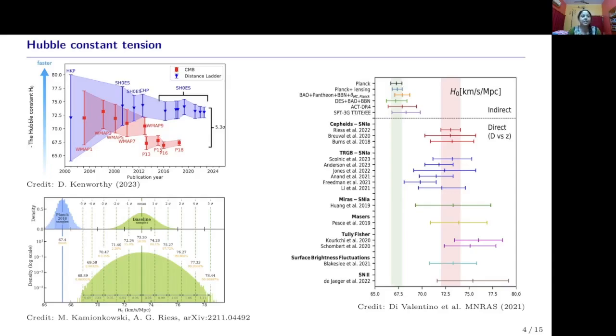This tension is not between two distinct datasets, but tension between direct versus indirect measurements. To understand possible ways to resolve this problem or address this tension, we need to understand how distance measurement works in cosmology or how the distance ladder has been built up.